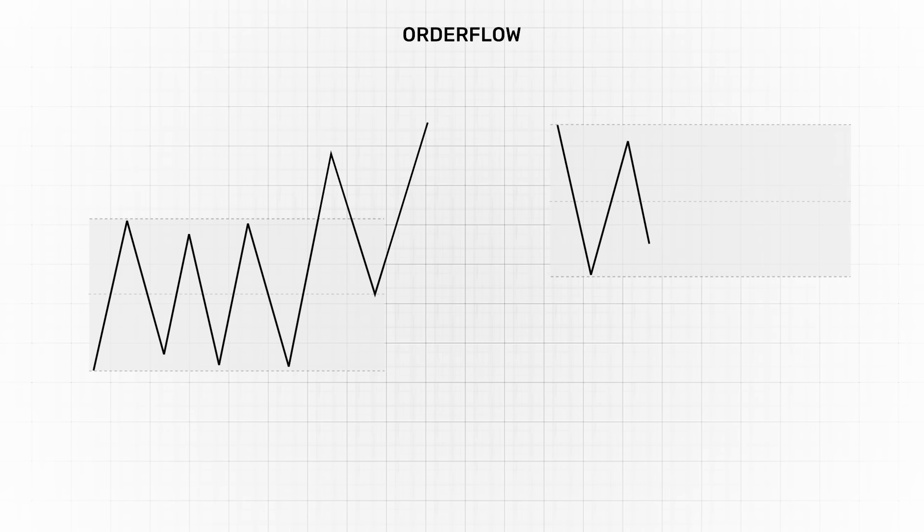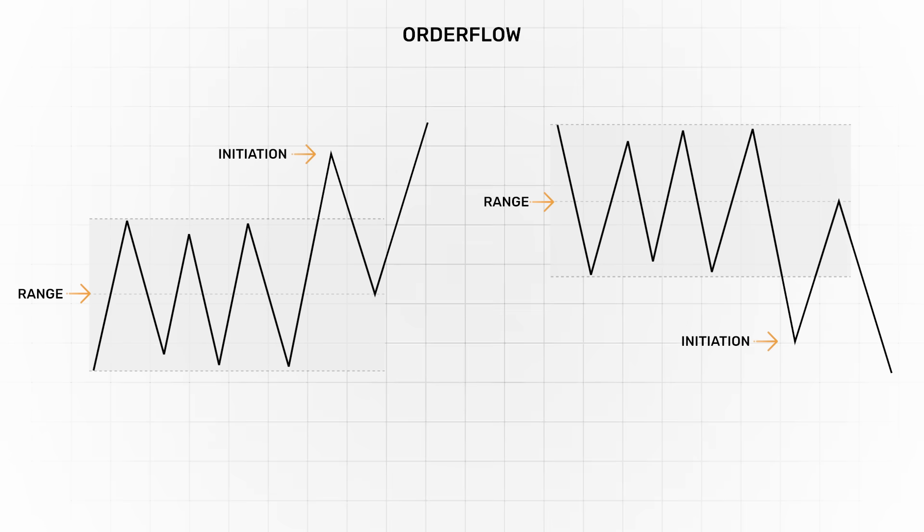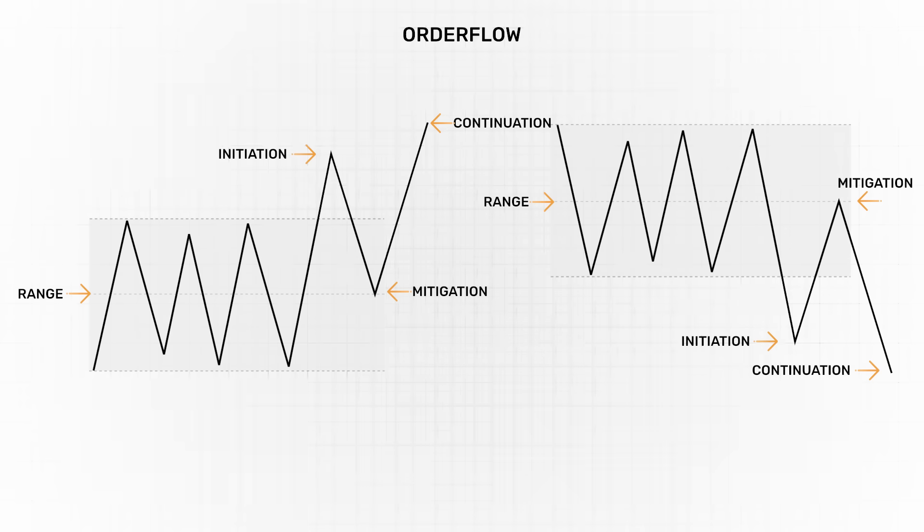And the exact opposite happens in the creation of supply zones where price is in a range. Sellers will then cause an overwhelming imbalance between supply and demand as price will rapidly break out to the downside. But again, we will wait for price to pull back to that supply zone to then look for potential shorting opportunities. And it's a four step process where we have the range, the initiation, the mitigation and the continuation.